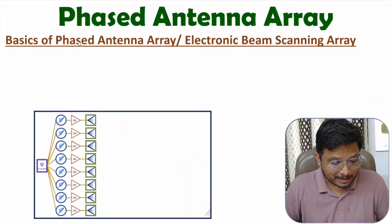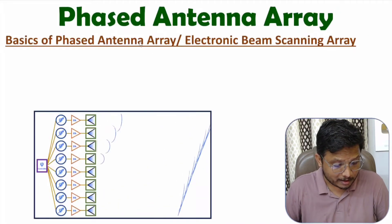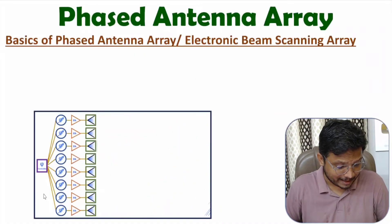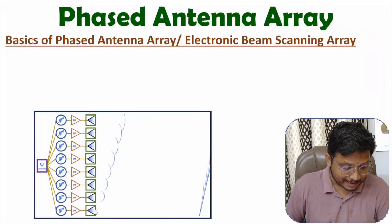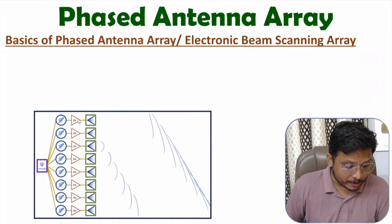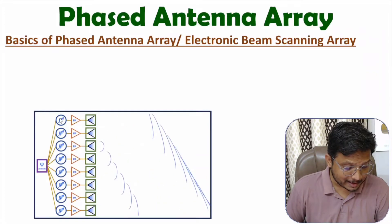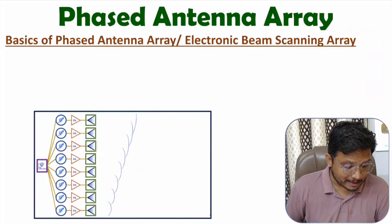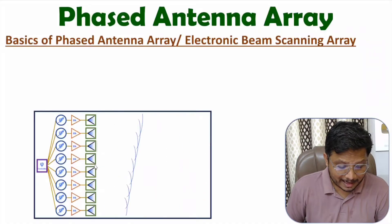Phased antenna array is a type of antenna array. In an antenna array, we have multiple elements of antenna. We have multiple antenna elements radiating EM waves in space. These antenna elements are connected with a power amplifier, and each antenna element is also connected with a phase shifter, which is connected with a phase controller.